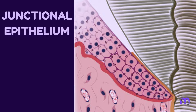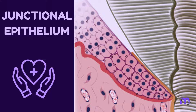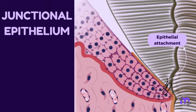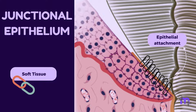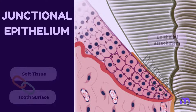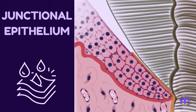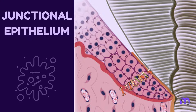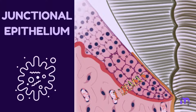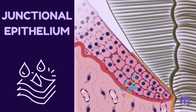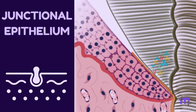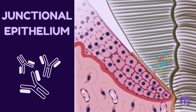The junctional epithelium is vital to the maintenance of periodontal health. It forms the epithelial attachment and therefore creates a firm connection of the soft tissue to the tooth surface. It is permeable and thus serves as a pathway for diffusion of the metabolic products of plaque bacteria like toxins, chemotactic agents, and antigens. There is also diffusion in the opposite direction of host defense substances like serum exudates, antibodies, etc.